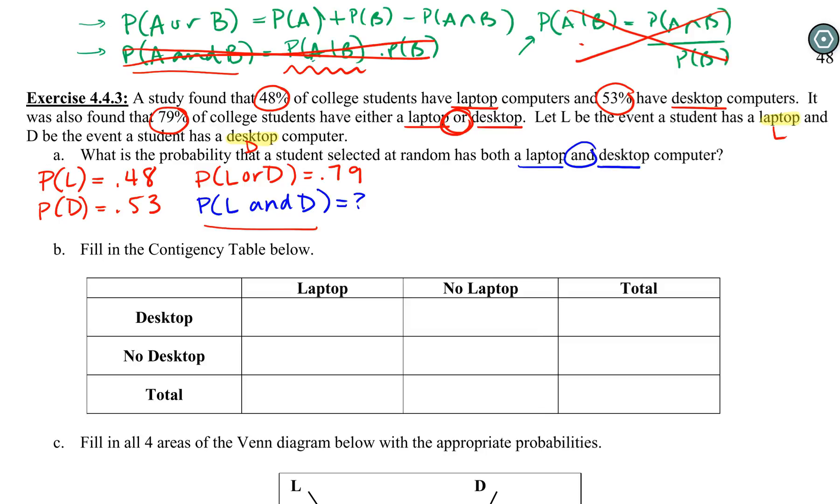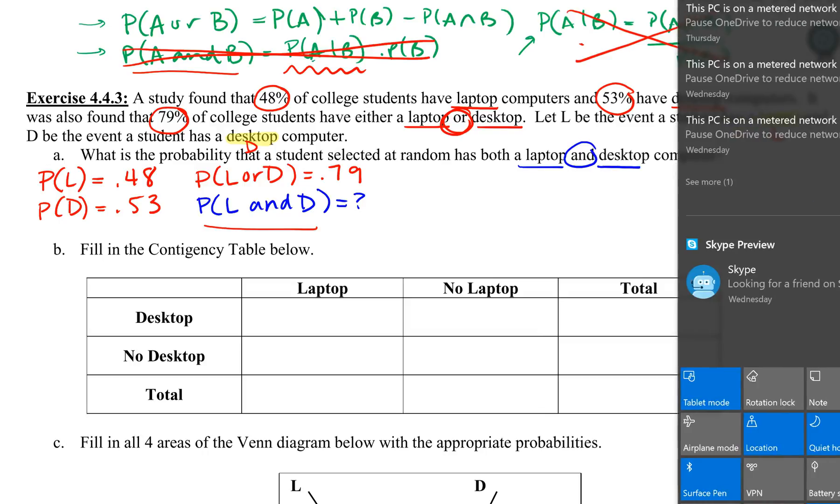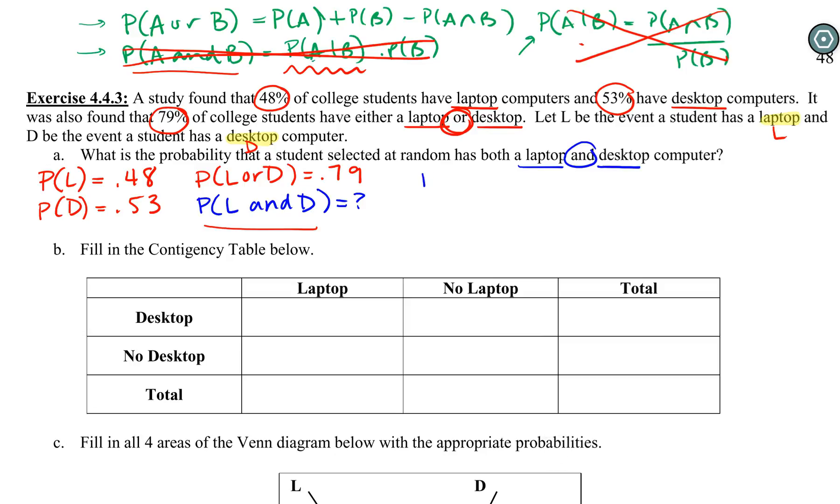If we did this in our two steps, the first step is to rewrite our formula with our actual event names. So P(L or D) = P(L) + P(D) - P(L and D). Then we replace what we have: P(L or D) is 0.79, P(L) is 0.48, P(D) is 0.53, and P(L and D) is what we're looking for.